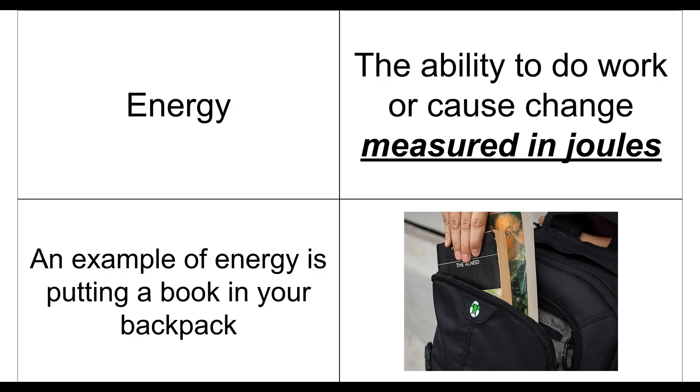So really all energy is is the ability to do work. So if it has the ability for work to occur, then there's energy. And we measure that, and this is joules. So a lot of people want to say that's joules. It's pronounced joules. It's named after a French physicist, and so that's why we call it joules, because that's how you pronounce that name.